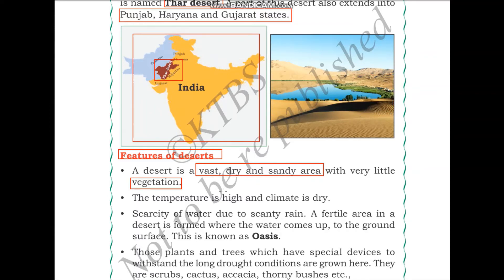The temperature is high and the climate is dry. Deserts do not receive rainfall. In fact, the driest place on earth in which no rainfall has ever been recorded is a desert — the Atacama Desert in South America. Scarcity of water due to scanty rainfall is one of the key characteristics of a desert. Scanty means little or no rainfall.